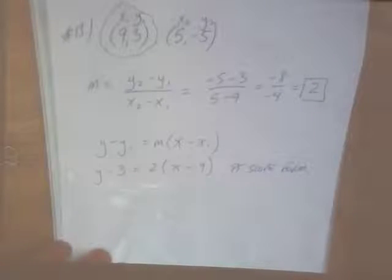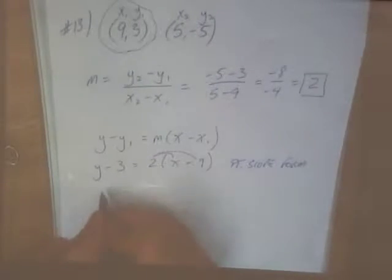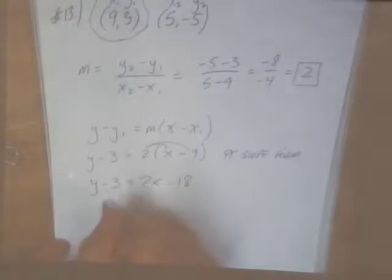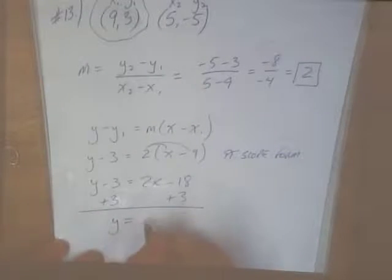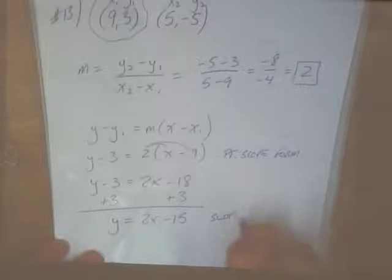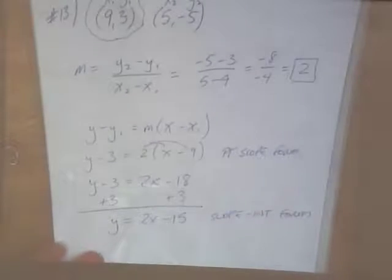Suppose they want it in slope intercept form. What's slope intercept form? Y equals M, X plus B, right? So you've got to get the Y by itself basically. So we'll distribute the 2, and then we'll add the 3 over. Y equals 2x minus 15. Slope intercept form. Questions on that?